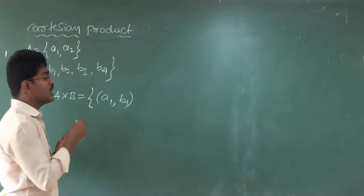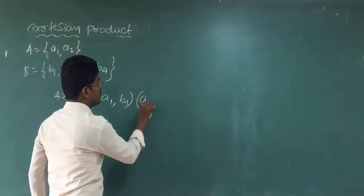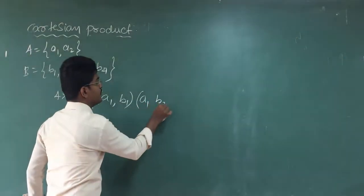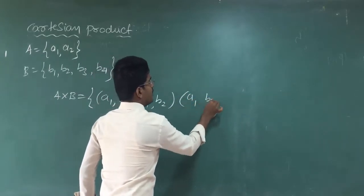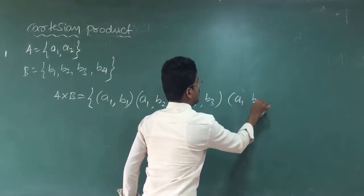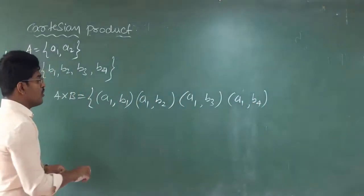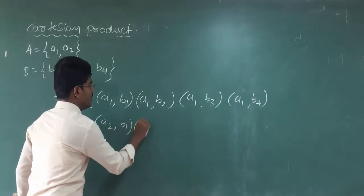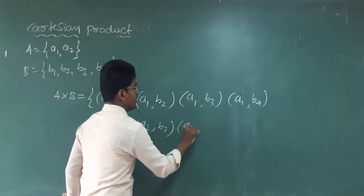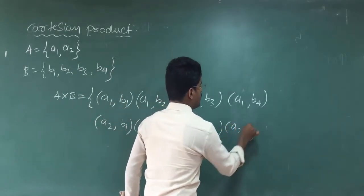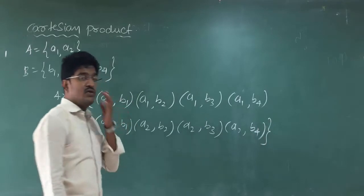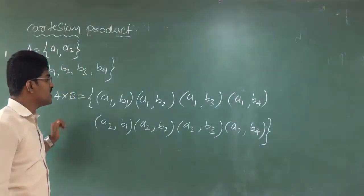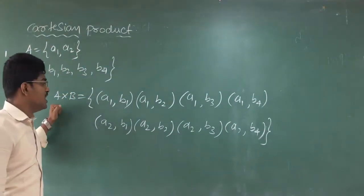This first set of ordered pairs is over. Now for the second element: (a2, b1), (a2, b2), (a2, b3), (a2, b4). Like this, you have to write all the ordered pairs with a1 and a2. This is how you create the ordered pairs in A cross B.